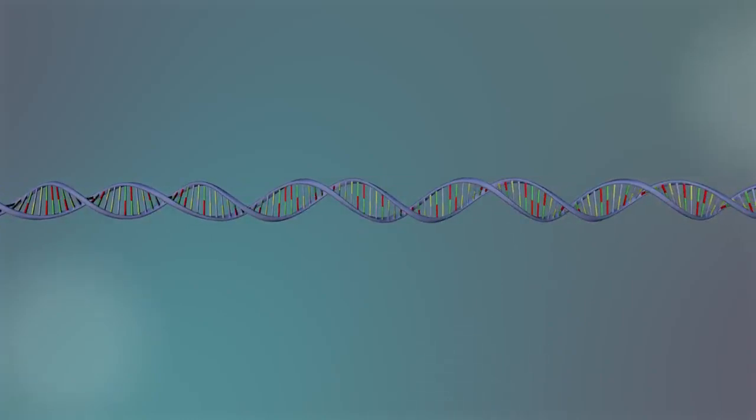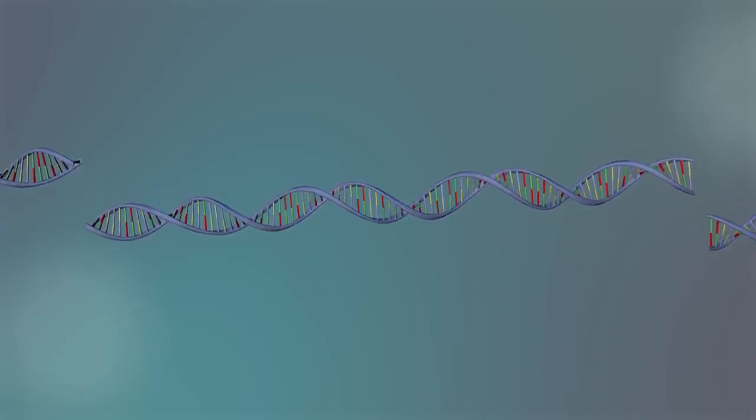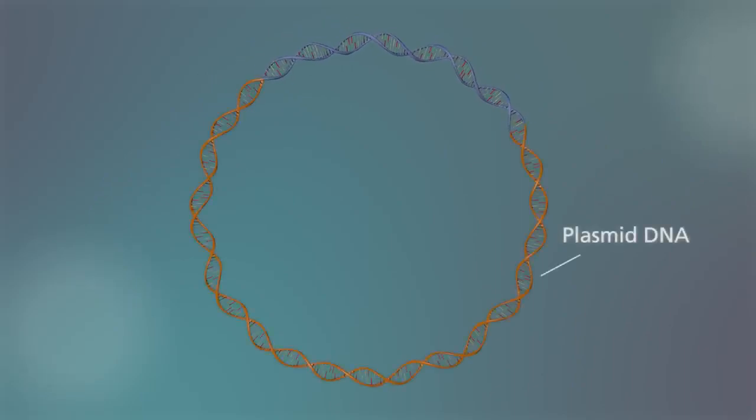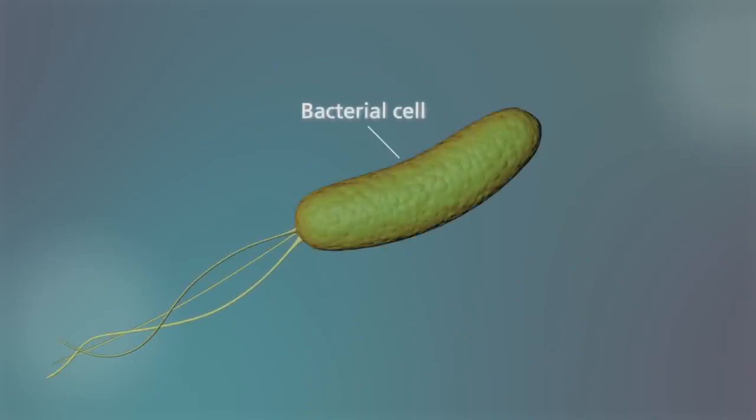Before we can sequence the DNA, it has to be cut up into smaller pieces that are inserted into plasmid DNA and then put into bacterial cells.